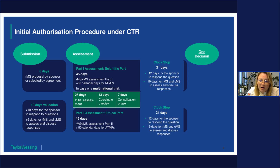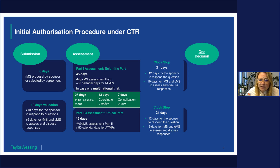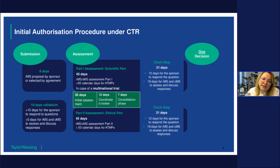Part 2 of the assessment concerns the ethical and national aspects of the clinical trial, and is conducted by each member state concerned in its own responsibility and for its own territory. The scope of Part 2 mainly comprises national aspects such as the safety of trial subjects, review of the ICF, the qualification of the clinical trial team, and the suitability of the trial sites. The approval procedure ends with one binding decision as to whether the clinical trial may be conducted, may not be conducted, or may only be conducted subject to specific conditions — and the sponsor receives one decision through CTIS.